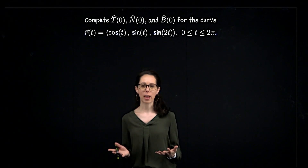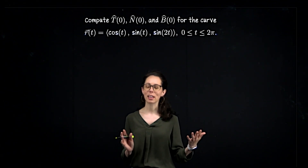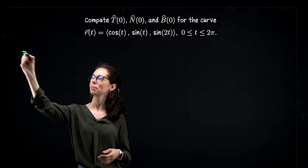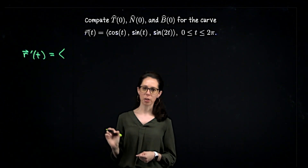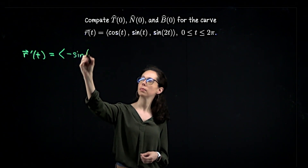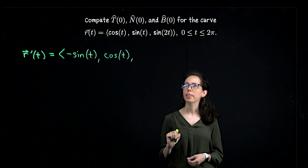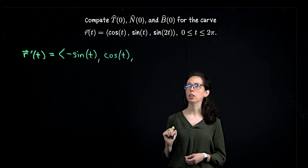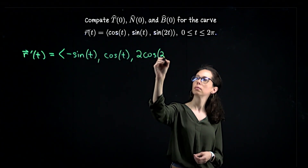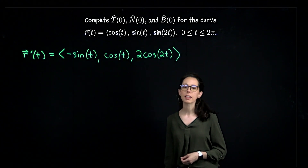Typically with this kind of parametrized curve exercise, the very first thing to do is compute the velocity vector r prime. Term by term differentiation: the first coordinate is the derivative of cosine of t, that's negative sine of t. Differentiate sine of t, we get cosine of t. And then with the chain rule, when we differentiate the third coordinate function sine of 2t, that will be 2 cosine of 2t. This is the velocity vector for this curve.